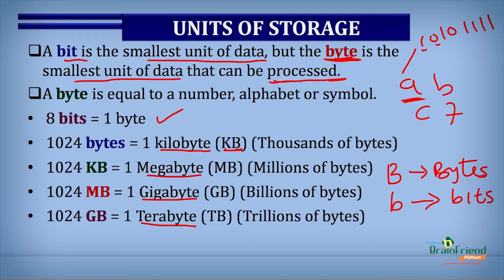Whereas small letter b is used to represent bits. So there are instances, probably when you're browsing, where you'll see 'bps' — this b stands for bits per second, not bytes. Capital letter B is used to represent bytes, while small letter b is used to represent bits. So kilobyte is represented as KB, megabyte as MB, gigabyte as GB — all caps — and terabyte as TB.